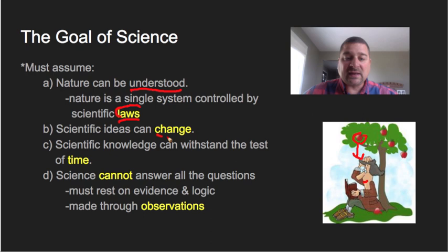Assumption number two, scientific ideas can change. When Einstein came along later and developed his theory of relativity, he didn't say Newton's laws of gravitational force and laws of motion were wrong. They were just included in, so when Einstein came along and did his theory of relativity, his theory of relativity included these as well as part of a bigger picture.